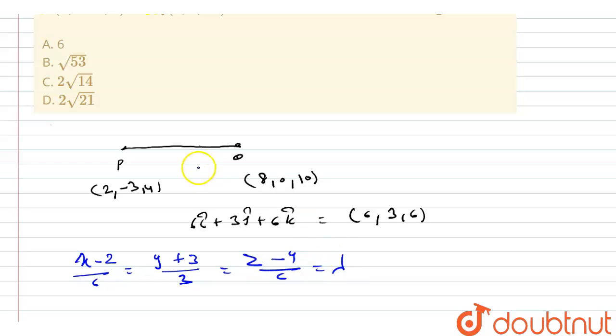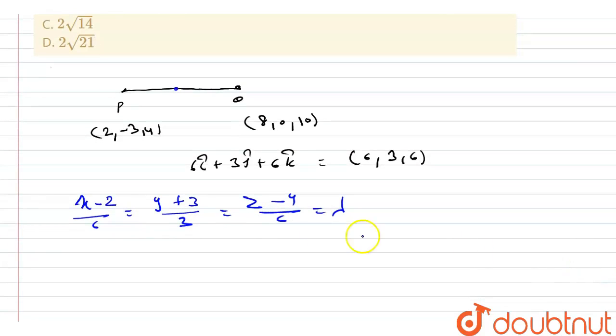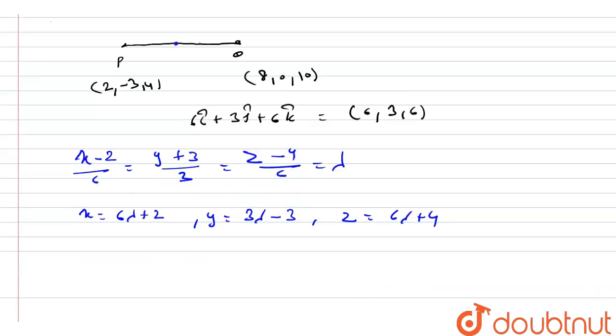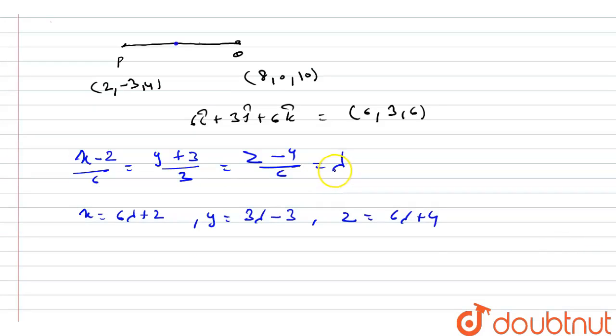So if any point lies on this line, then its form is x = 6λ + 2, y = 3λ - 3, and z = 6λ + 4.